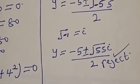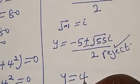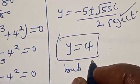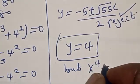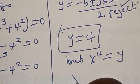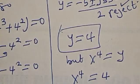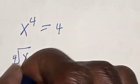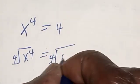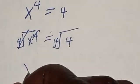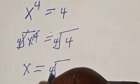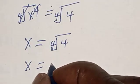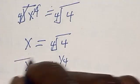We reject the complex solution. The only real solution we have is y equals 4. But recall that s raised to power 4 equals y, so s raised to power 4 equals 4. Taking the 4th root of both sides, the 4th root of s raised to power 4 equals the 4th root of 4. Therefore, s equals 4 raised to the power of 1 over 4. That is our final answer.